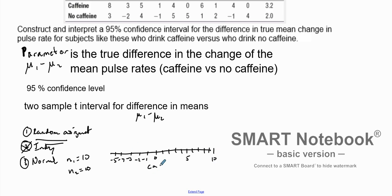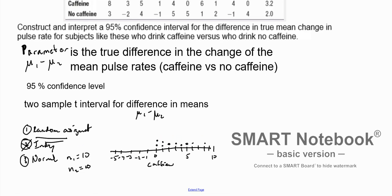This is the caffeine group graph. We plot the data points: one at eight, one at seven, one at six, one at six, one at four, and one at zero. There doesn't appear to be any strong outliers — maybe a little bit of skew, but not too bad. And we can do the same for the next one.